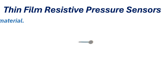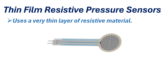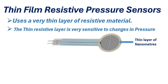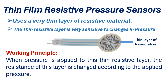Thin film resistive pressure transmitters are another type of pressure transmitters. These transmitters use a very thin layer of resistive material to measure the applied pressure. This layer is very thin, in the order of nanometers, making it very sensitive to changes in applied pressure. When pressure is applied to this thin layer, the resistance of the layer changes according to the applied pressure.